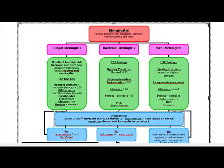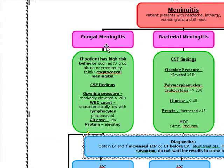It's pretty easy to distinguish these two based on history. Fungal meningitis on the exam is going to present a patient with high-risk behaviors such as IV drug abuse or promiscuity. Cryptococcal meningitis is going to be the cause of the fungal meningitis, and it characteristically has a low WBC count with lymphocyte predominance.